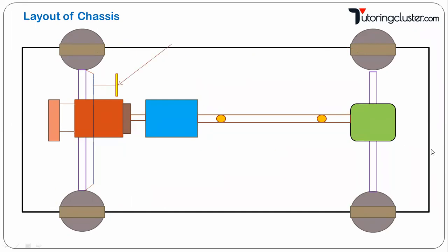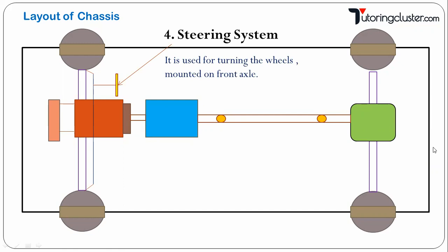Now the next part is the steering system. The steering system is basically used for turning the vehicle in a desired direction. Where is it mounted? It is mounted on the front axle. Remember the position — you can draw this layout in your book, give the numbering, and write the name of each particular system.